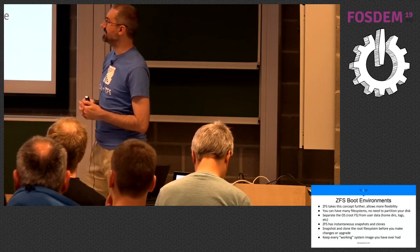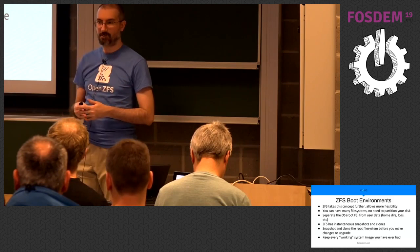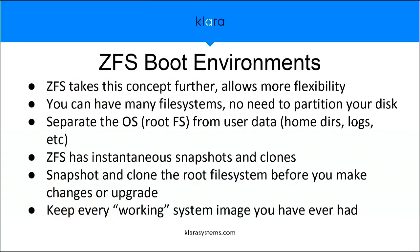With ZFS we can actually have multiple versions of the root file system. We have a version of slash with the current software, we can snapshot and clone that and keep it as the before image, then upgrade the system in place. If the upgrade doesn't work, we just reboot onto the older version. Same idea as NanoBSD, except you're not limited to two images — you can keep the last ten or whatever, however much space you have available.